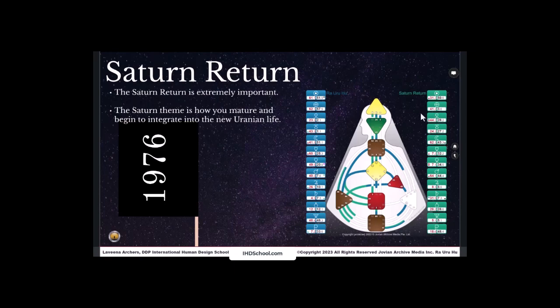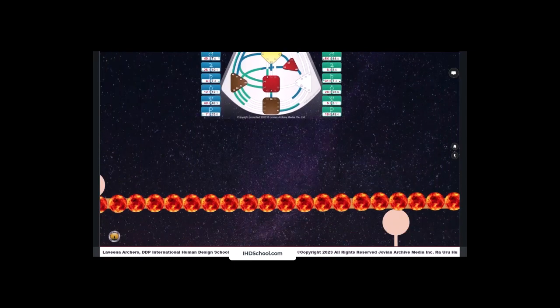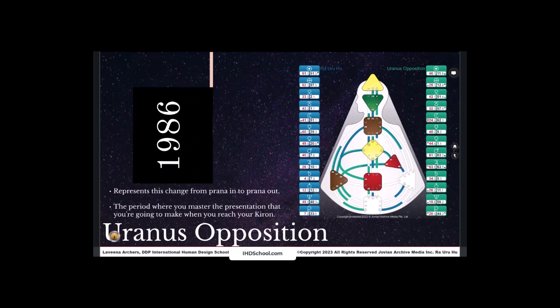You can see with him, it's the left angle cross of wishes. Now further, the next place that we move to beyond the Saturn cycle, for Ra, his Uranus opposition was in 1986. And this represents a change from energy, prana, flowing into the life to now shifting gears and prana energy flowing out in the life. So this time frame, seven and a half years again, around between 38 and 44 years of age, because Uranus is a planet that moves very unusually, weirdly, wacky, eccentrically.